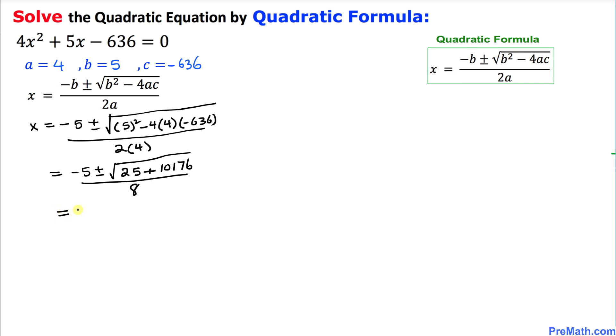Let's simplify furthermore. Negative 5 plus or minus, when we add these numbers, that's going to give us negative 5 plus or minus 10201 divided by 8. The square root of this number is simply 101, this is a perfect square. So this is negative 5 plus or minus 101 divided by 8.